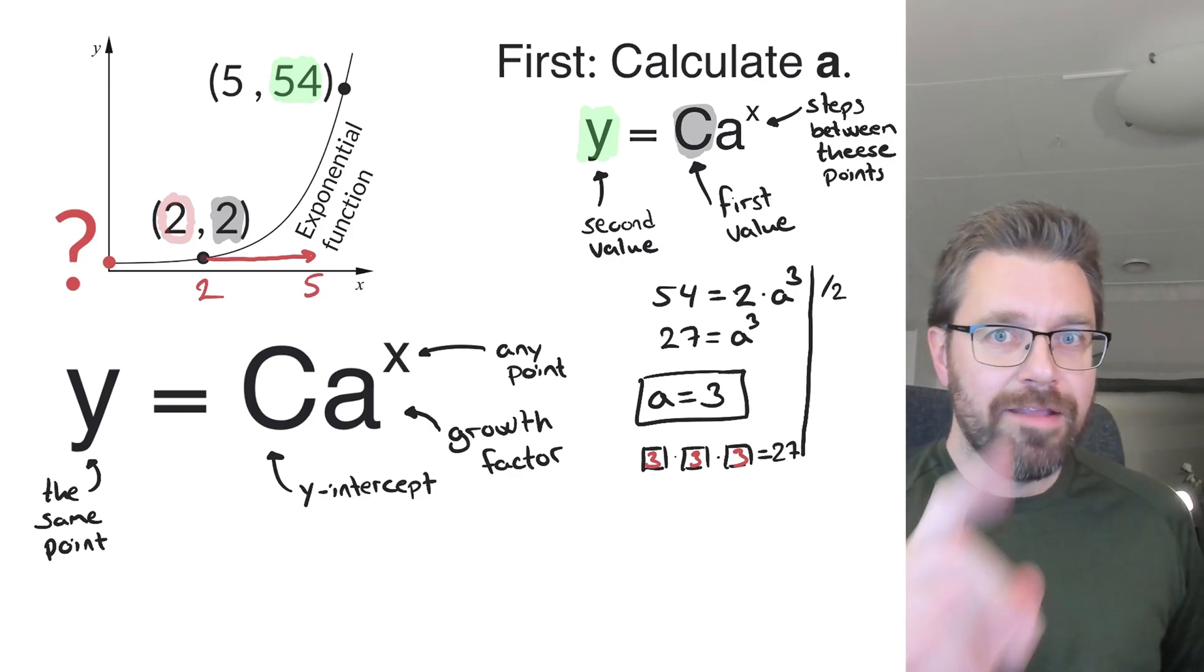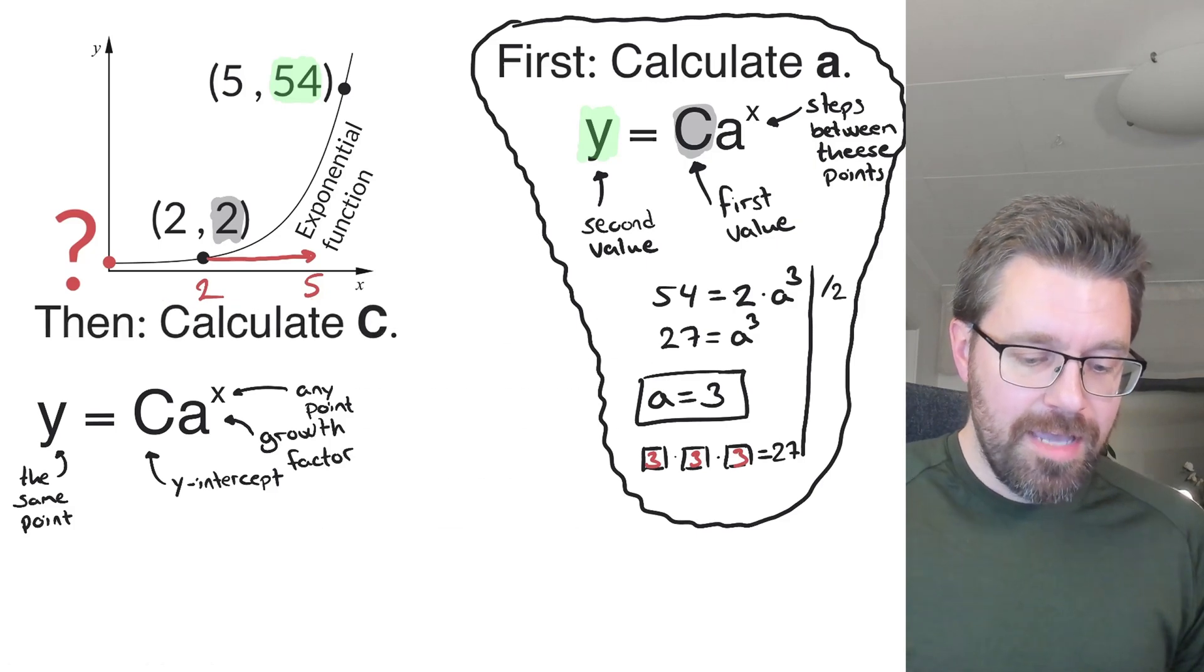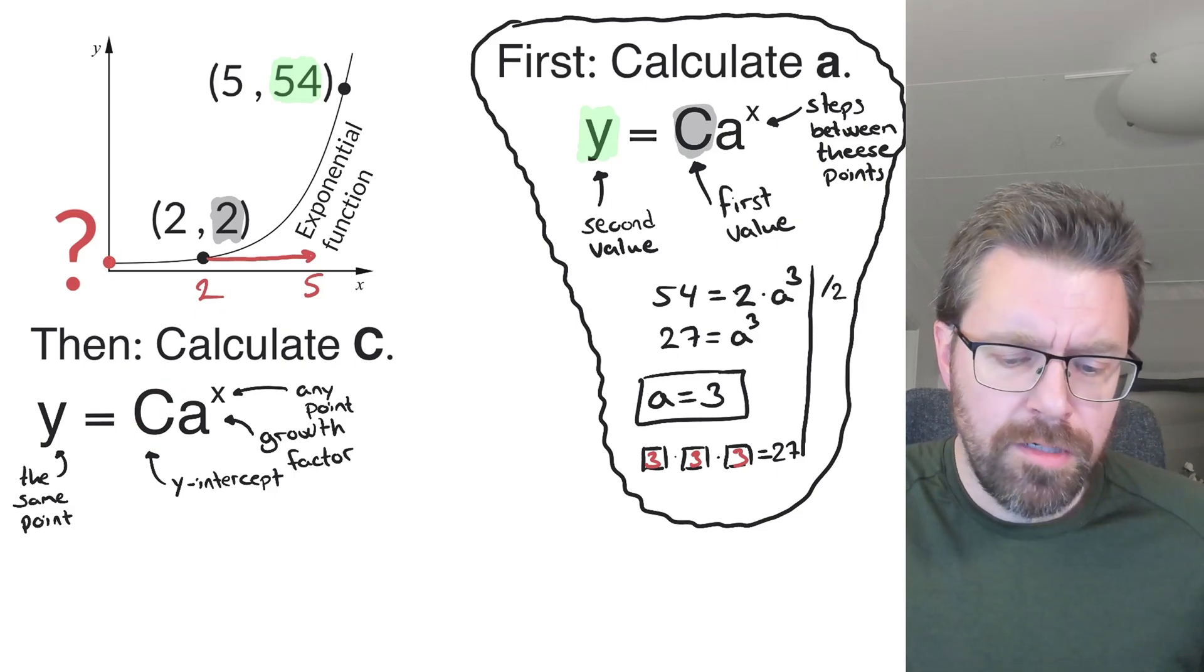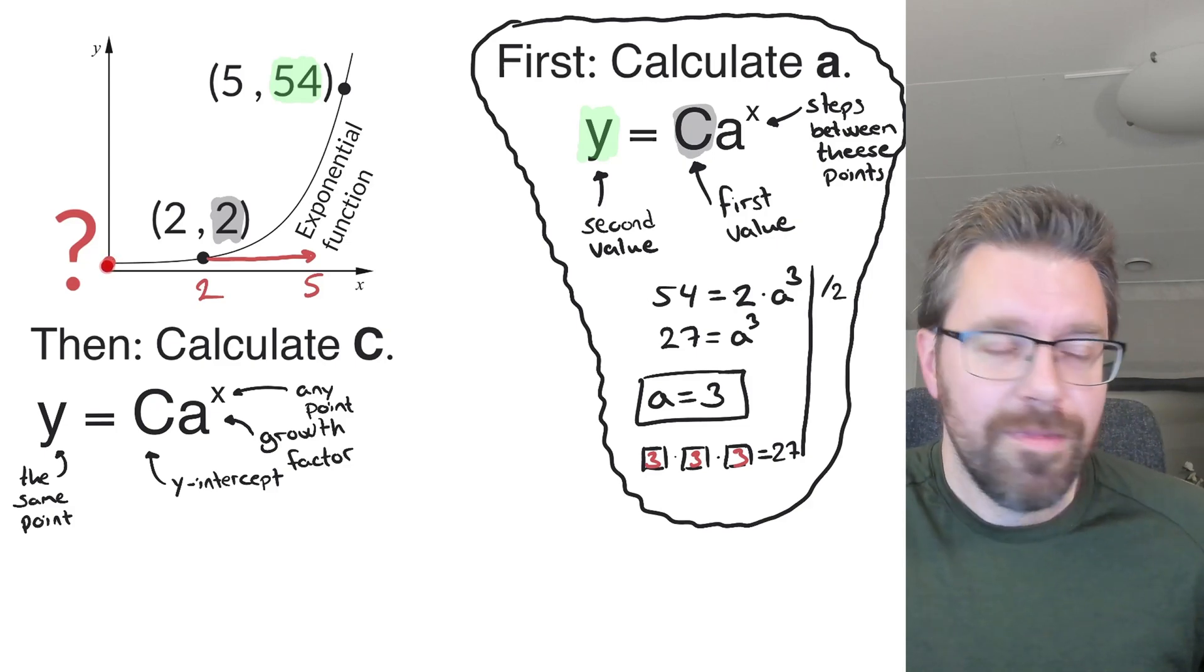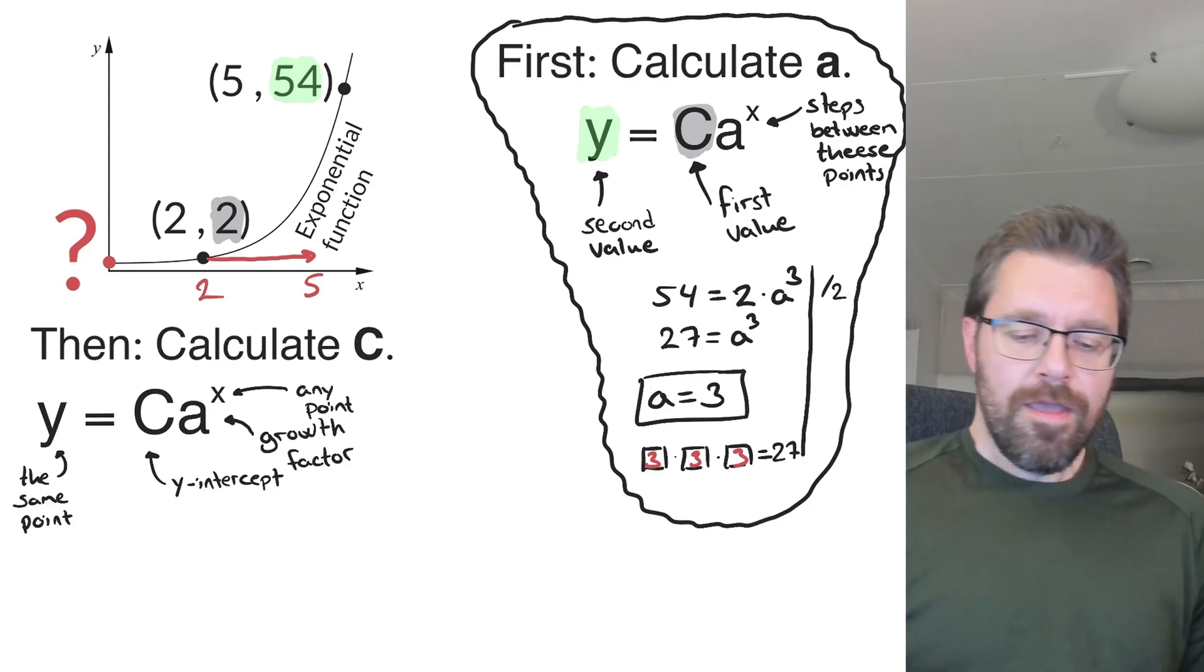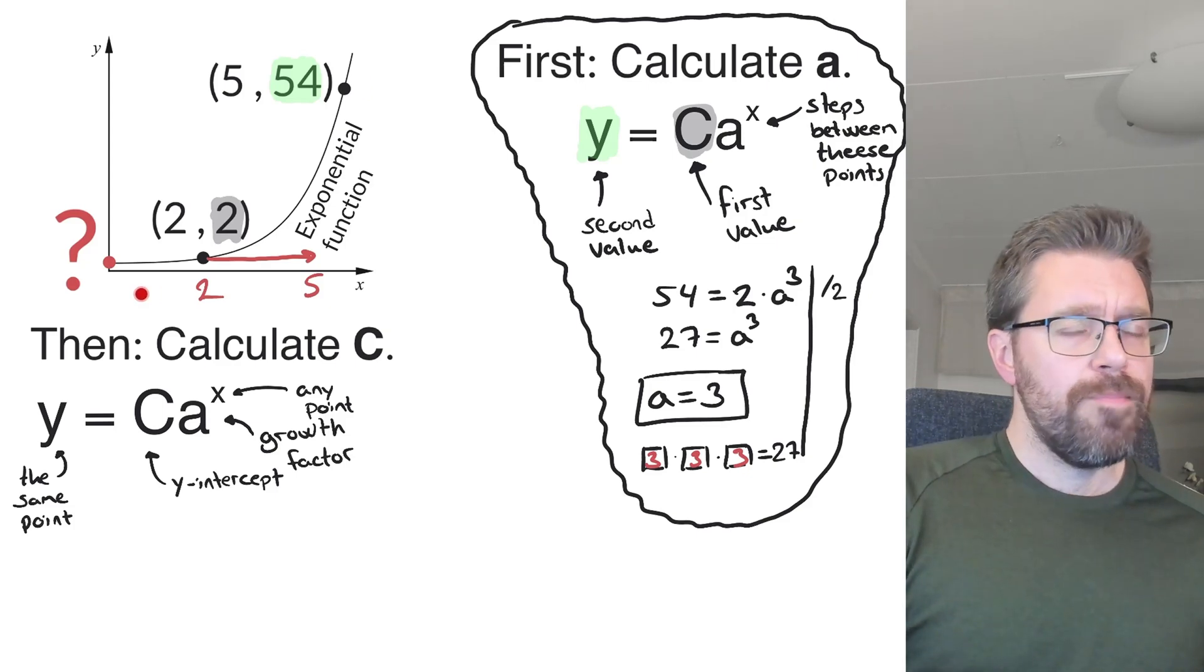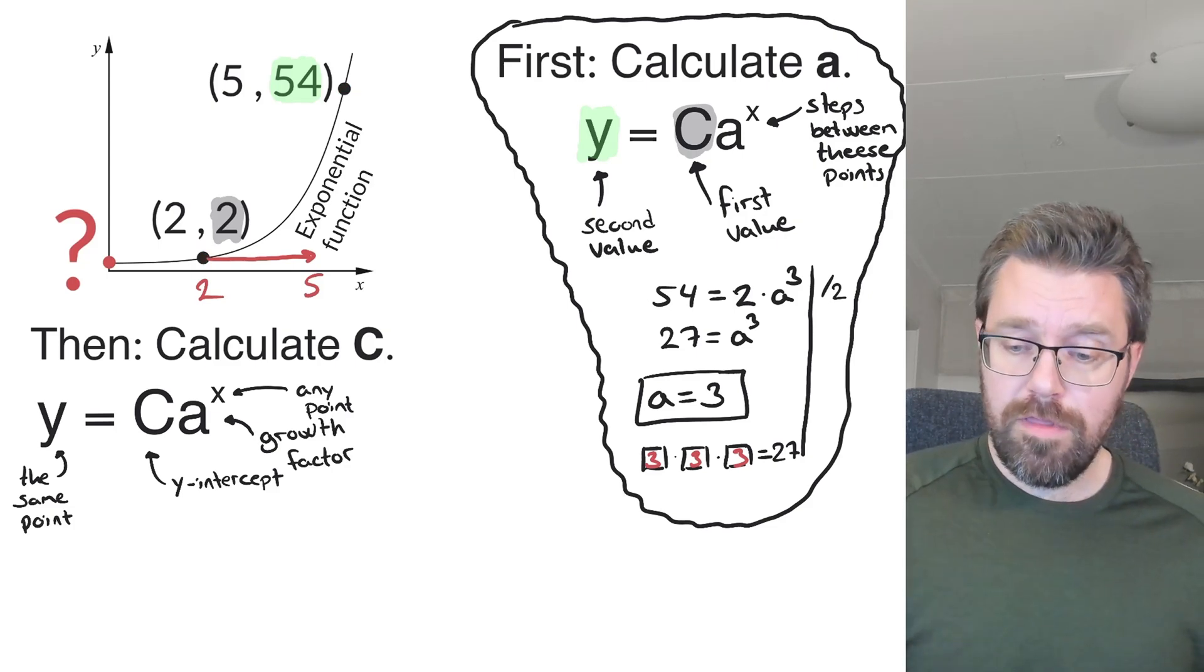So we have done the first step, and now we are ready to calculate c. Now we can use the function as it's supposed to be, where c is the y-intercept. Not like the first step, but c is this point. So we set up the equation again. x and y is any point on the graph. I can choose between this point or this one, but this is simpler, so I choose this one.